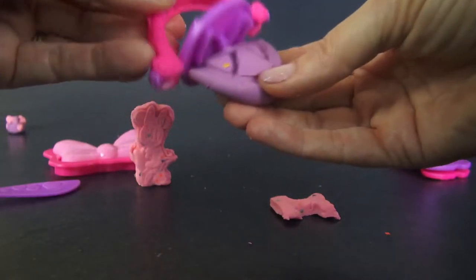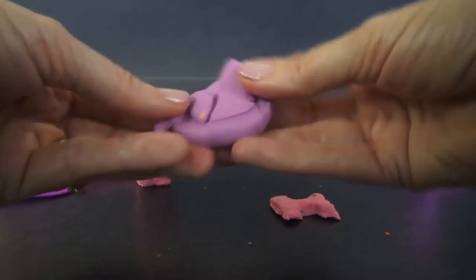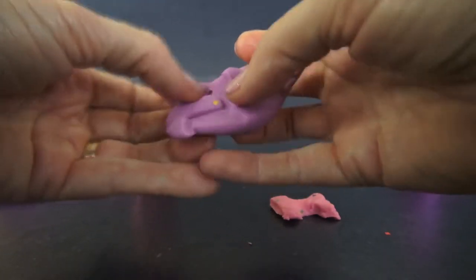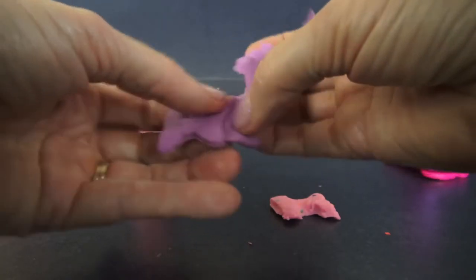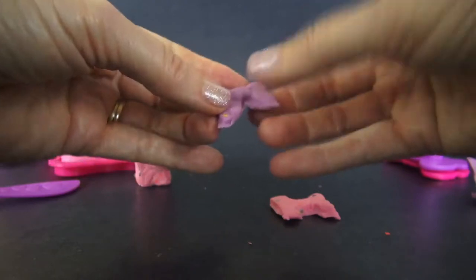I'm really going to press hard there. There we go. That one, I don't even think we need the knife. You know, maybe a little bit. I think we got it. There we go. And so look, Minnie, we made you a purple bow.